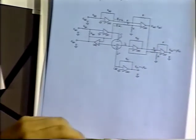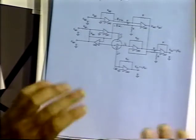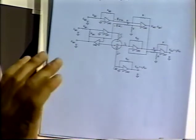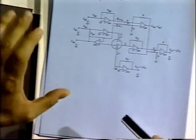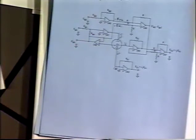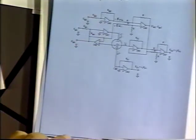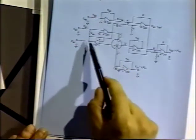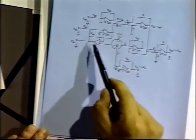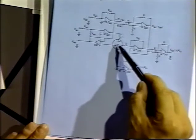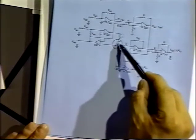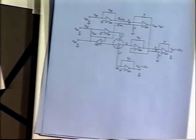So it looks very complicated, and it is a little bit. But you can see it's not that difficult to understand if you think about what we talked about before — all the circuit elements are there. The only really tricky part is this feedback loop, the potentiostat part. But that can be understood too, by thinking of it as simply a resistor between the reference and the working electrode.